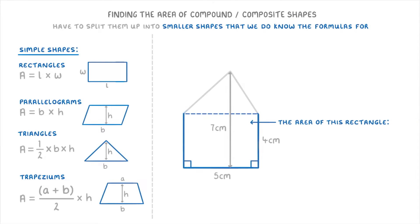So to find the area of this rectangle, we need to use this formula in the top left and do length times width, which in our case would be the length of five centimeters times the width of four centimeters, which gives us 20 square centimeters.